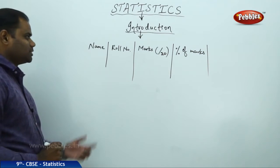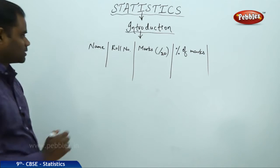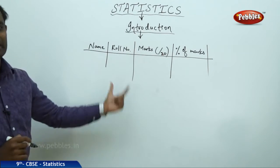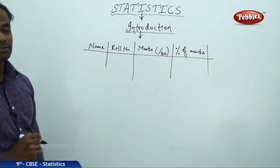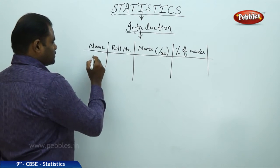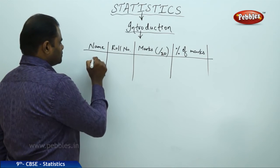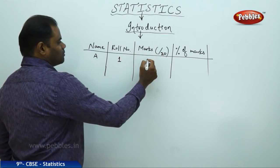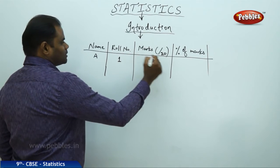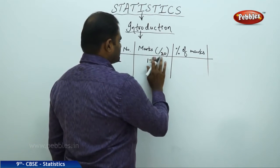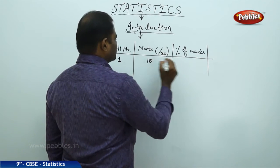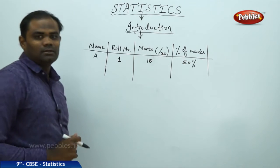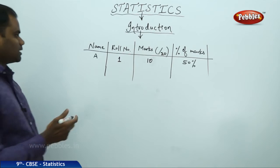Say a student with name A and roll number 1 has got 10 marks out of 20, which is 50%. Student B, whose roll number is 7, has got 15 marks out of 20, which is 75%.